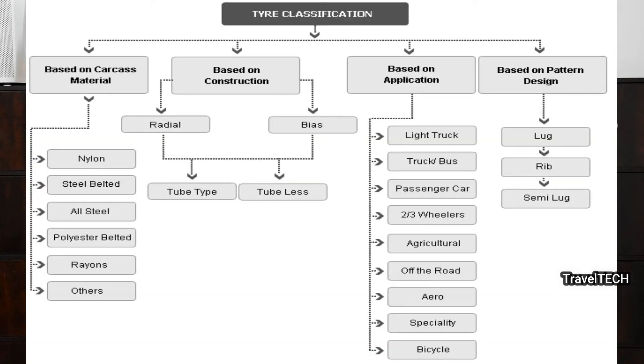Now let's look at the different ways tires are classified. They are broadly classified into four types. As you can see on the screen, the tires are classified based on: carcass material, construction, application, and pattern design.